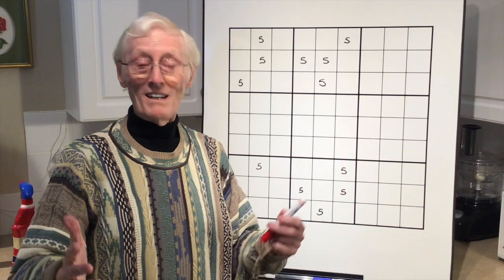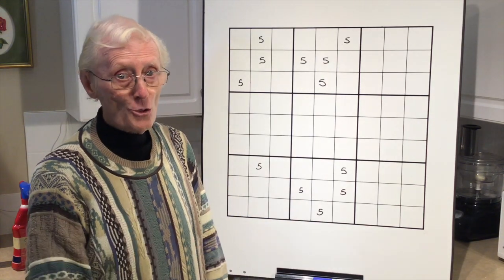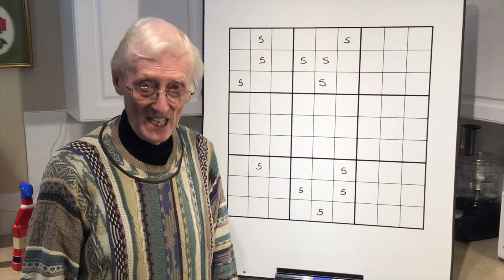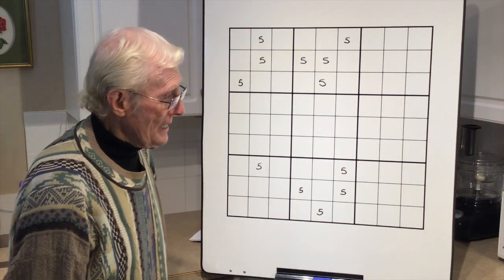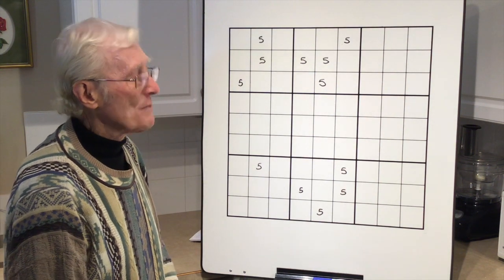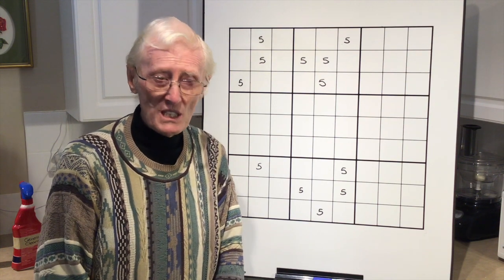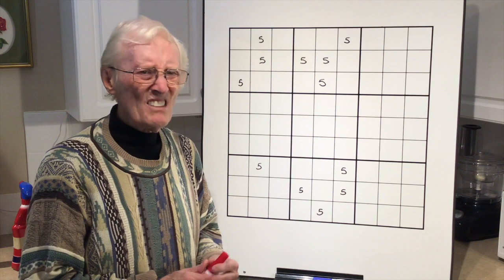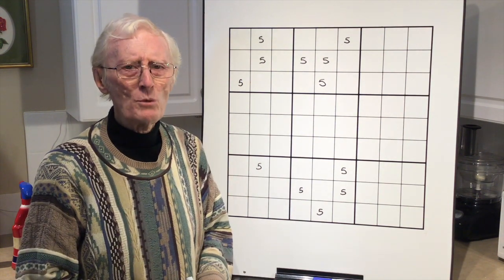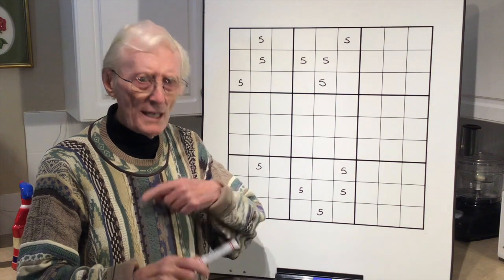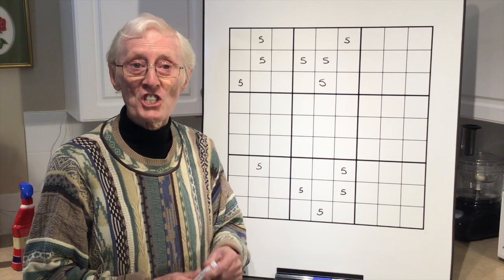Hi everyone, here we are — Robin the Sudoku guy again — with tutorial number 70. You may remember back when I did the W-wing, tutorial number 64. A couple of people asked me how I worked out what to get rid of in the W-wing, so I thought I'd cover a bit more about that by showing you another chain.